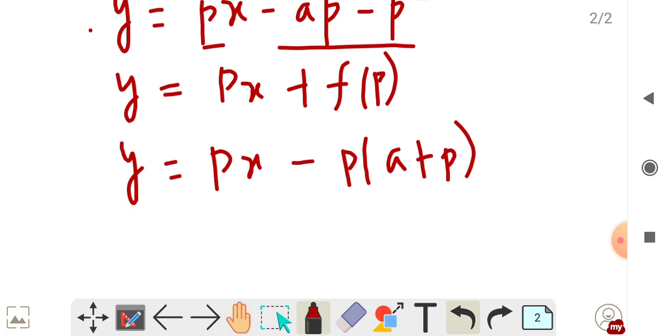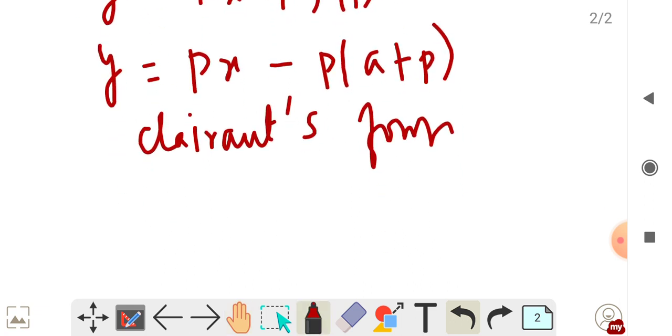Since it is of Clairaut's form, you can put directly the value of p as c. So p is equal to c.